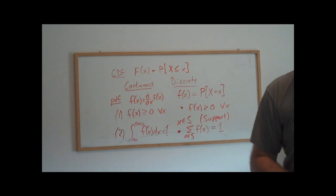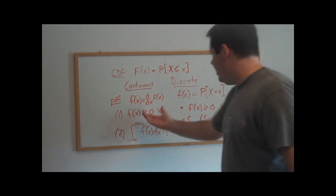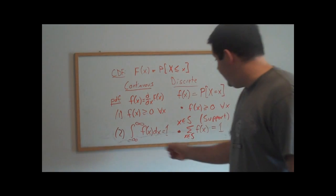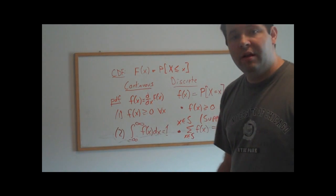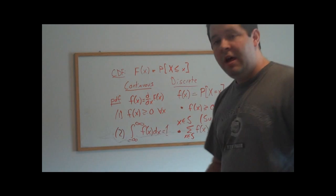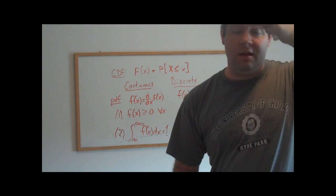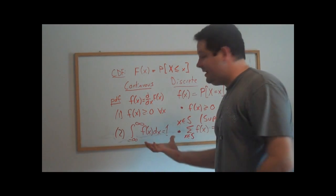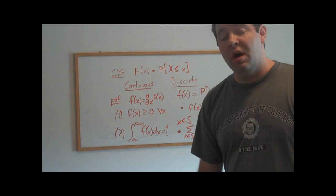And when we integrate over the entire real line, this density function, it's got to be that that integral equals one. And so these are the two properties that our densities or mass functions have to obey.